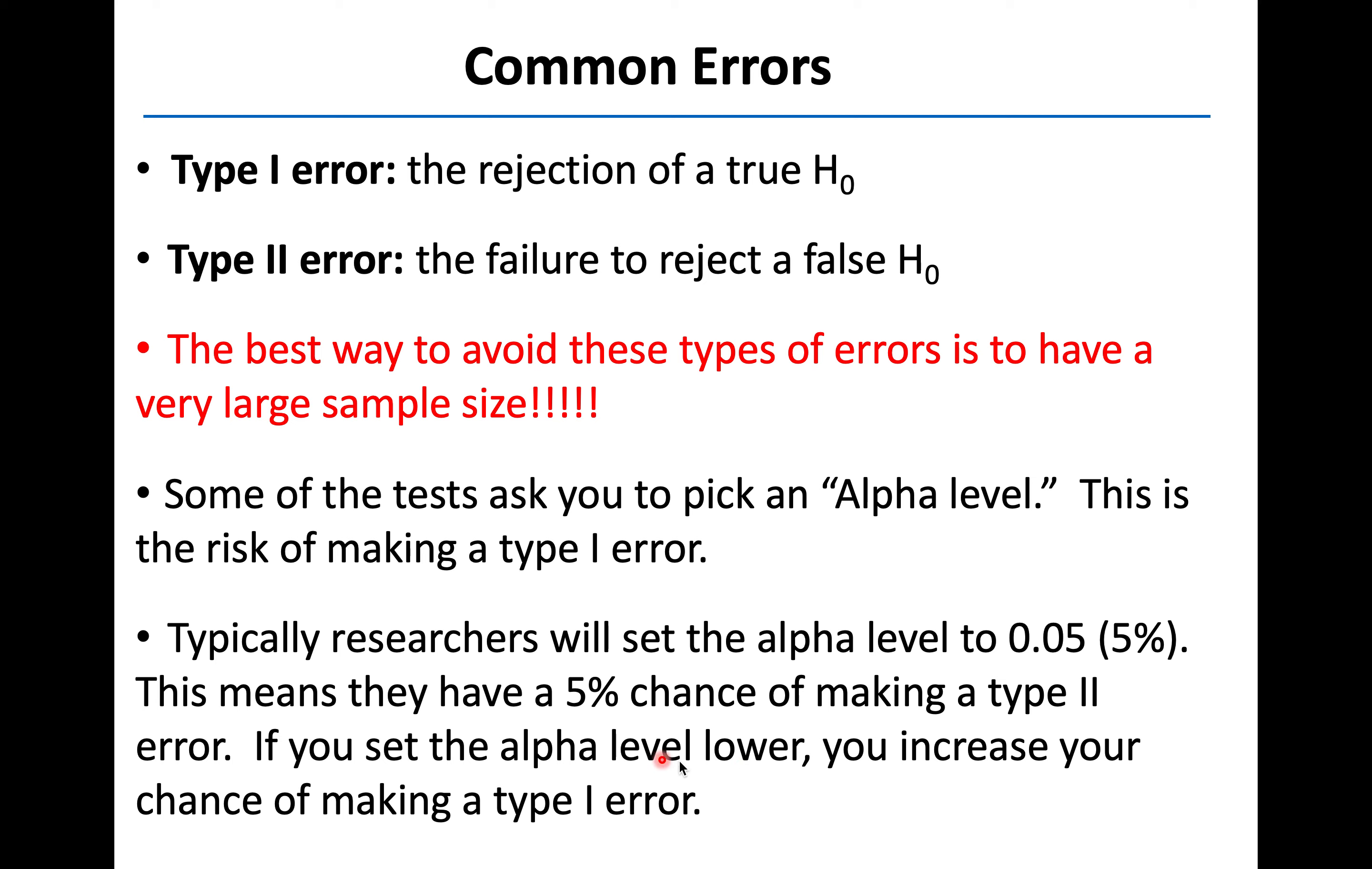Whereas if you set the alpha level lower, then you increase your chance of making a type 1 error. So it's a bit of walking a tight rope there. But essentially, we're saying, if we've set this alpha level to 5%, we really have like 95% confidence in our interpretation of that statistical test, which for most people is pretty good. There's still a chance, 5% chance that's incorrect, but we're probably on the right track.